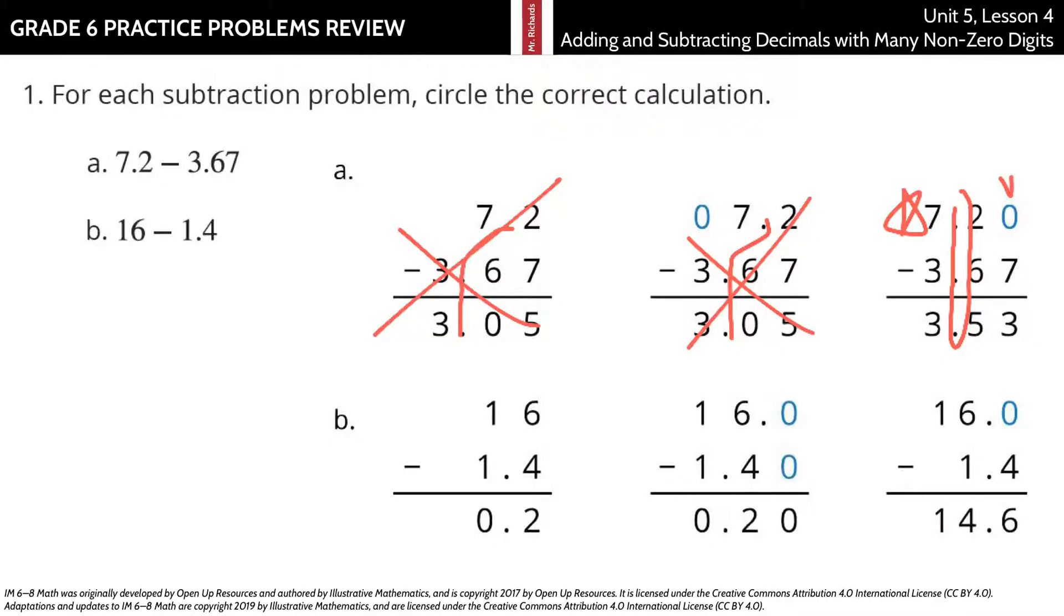16 minus 1 and 4 tenths. Well, the decimal point for 16 is here, and so that's not right. Here, that's not right either.